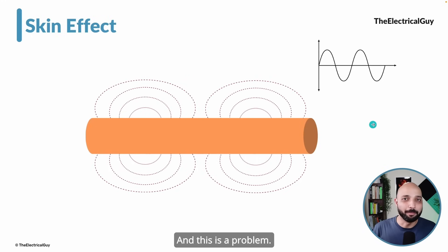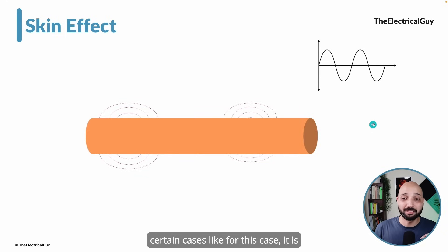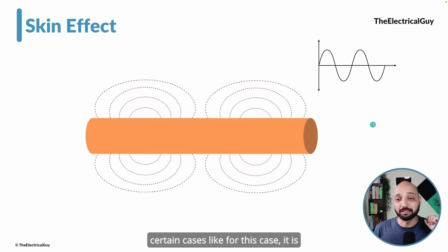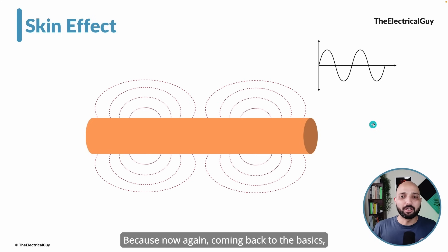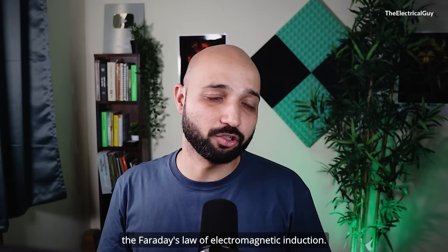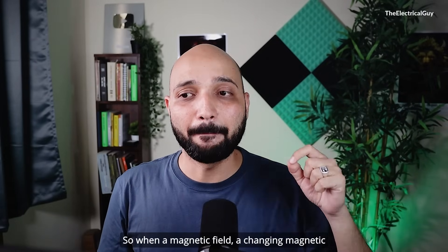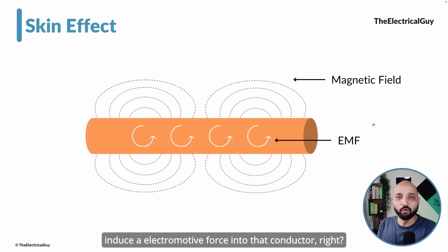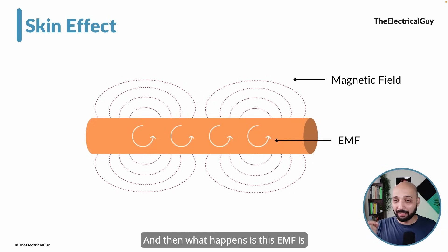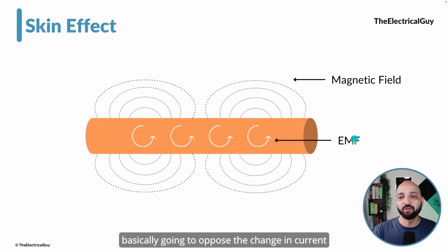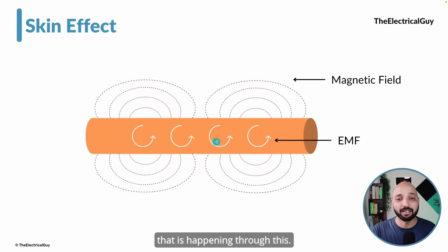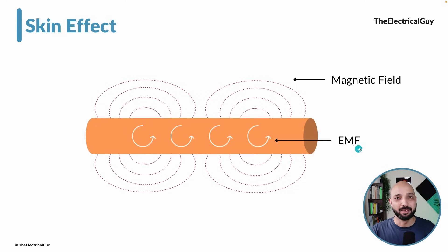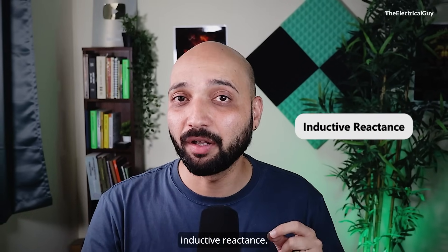This is a problem. Because now, coming back to Faraday's law of electromagnetic induction — when a changing magnetic field is induced, it is going to induce an electromotive force (EMF) into that conductor. And then what happens is this EMF is basically going to oppose the change in current happening through the conductor. This is what we refer to as inductive reactance.